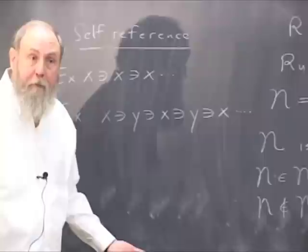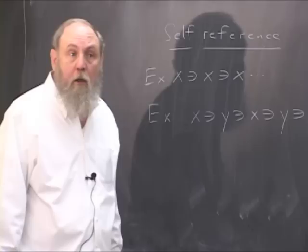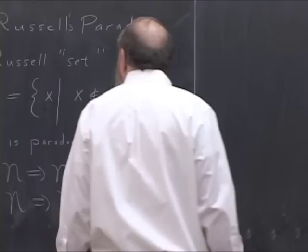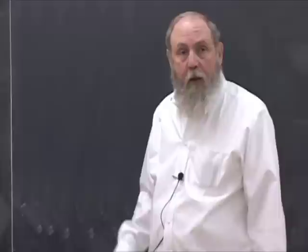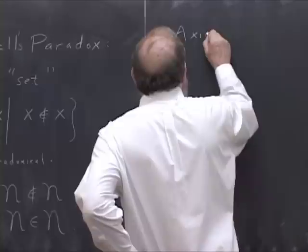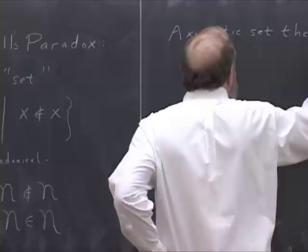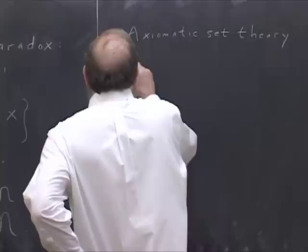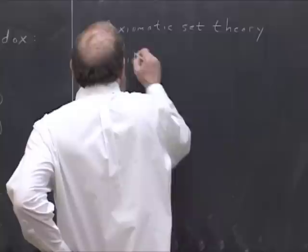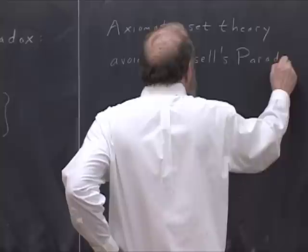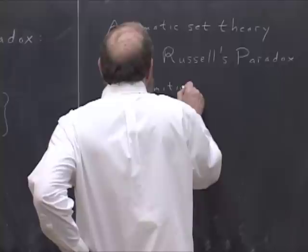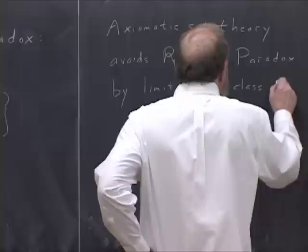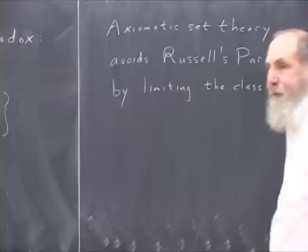Well, it has to do something in order to skirt this paradox, and it's basically the task of axiomatic set theory to find a way of dealing with a set as a primitive in such a way that this paradox no longer appears. So axiomatic set theory voids Russell's paradox by limiting the class of sets.